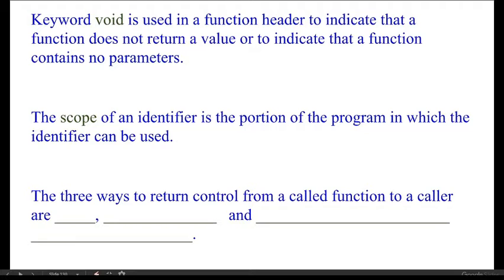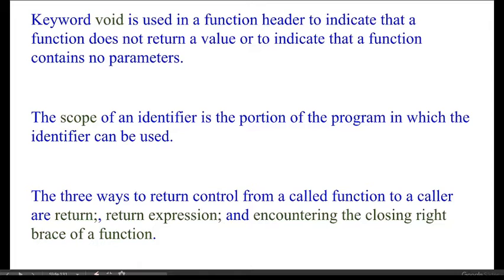The three ways to return control from a called function to the caller are: first, the return statement; second, return followed by an expression or semicolon; and third, the closing right brace of the function.